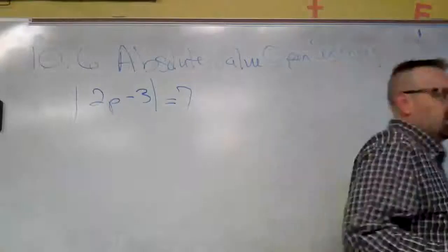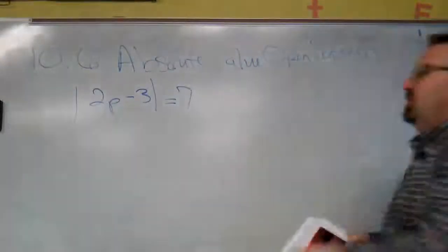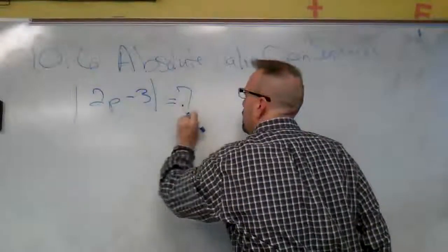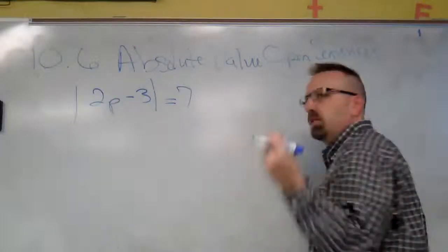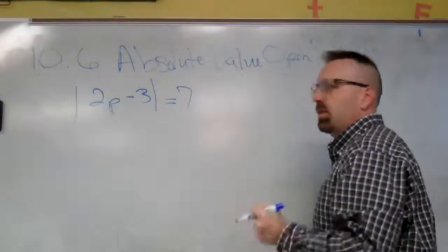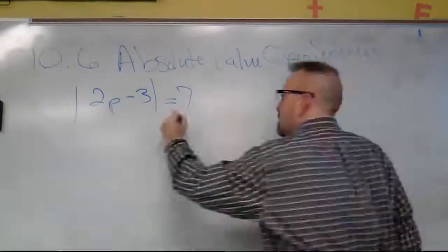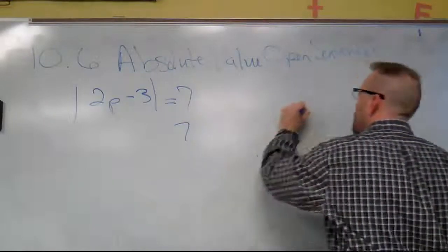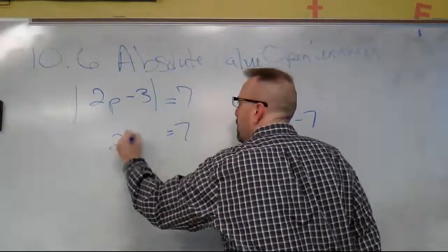We want to know what quantity is seven units away from zero. What numbers are seven units away from zero? Positive seven or negative seven. So we're going to set it up as two equations. We did this Friday. The only difference now is we've got that coefficient in front, so we've got to do two steps instead of one.